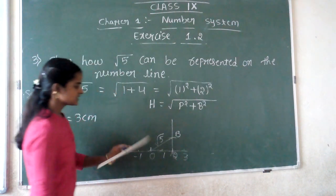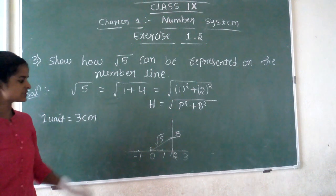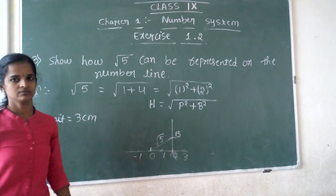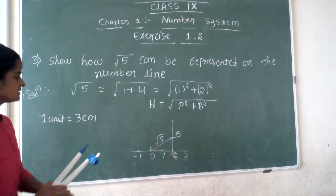This OB line is √5. Next, you have to use the compass with radius equal to OB to transfer it to the number line.